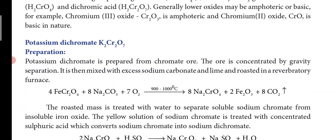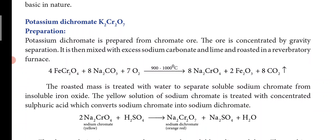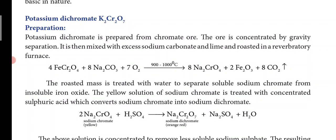First we have potassium dichromate, with molecular formula K₂Cr₂O₇. It is prepared from chromate ore. The ore is concentrated by gravity separation, then mixed with excess sodium carbonate and lime and roasted in the reverberatory furnace. The reverberatory furnace is one we discussed earlier — heat is radiated onto the substance for heating.